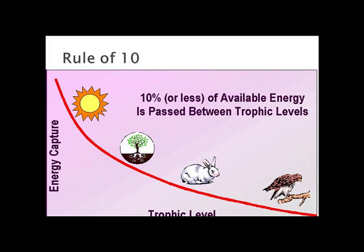Only 10% of the energy is transferred from one trophic level to the next; the rest is typically lost as heat. For example, it takes 100 kilograms of plant material to support 10 kilograms of herbivores, and 10 kilograms of herbivores to support just one kilogram of secondary consumers. From a sustainability standpoint for humans, the more vegetables you eat — eating producers directly — the more energy stays in the ecosystem, making it more sustainable.